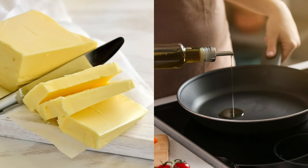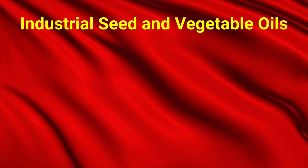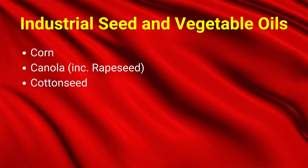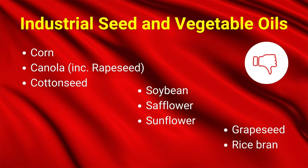The top red flag products in the fat and oil category that are best to avoid are a group of highly processed products known as industrial seed and vegetable oils — think corn, canola, cottonseed, soybean, safflower, sunflower, grapeseed, and rice bran oils.